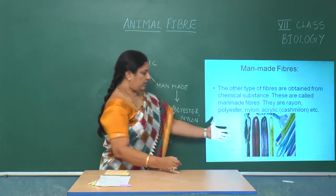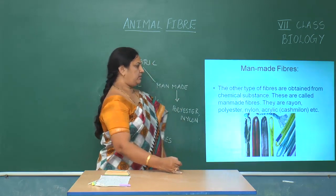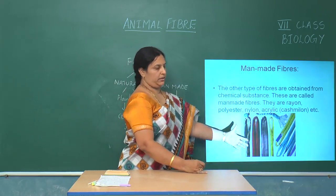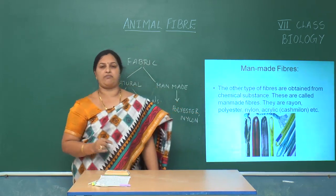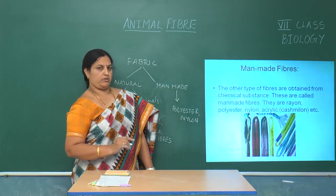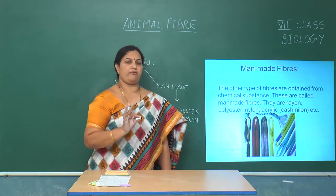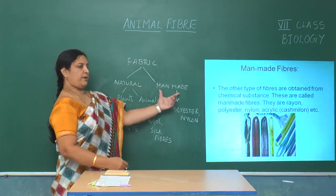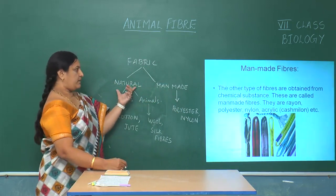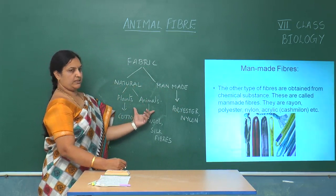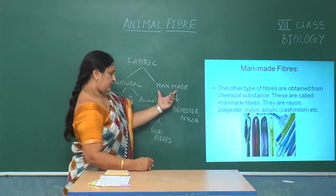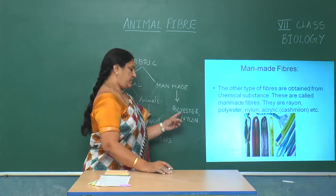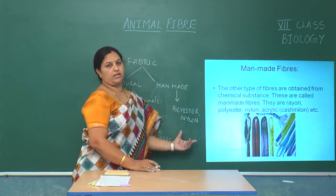These are the different manmade fibers, also referred to as synthetic fibers. So, what are the two types of fibers from which fabric is produced? Natural fiber and manmade fiber. Natural fibers are produced from plants and animals. Manmade fibers are used to produce fabrics such as polyester and nylon.